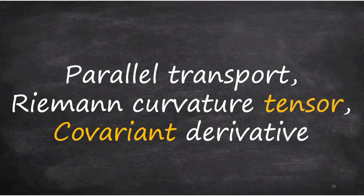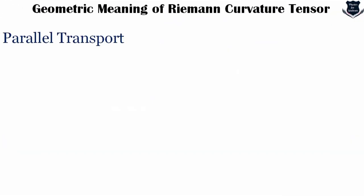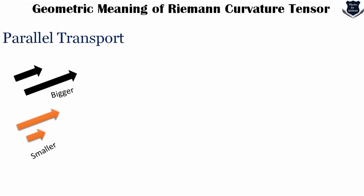We will quickly touch base on parallel transport, the Riemann curvature tensor, and the covariant derivative — each of which I have a separate detailed video for in my playlist. What do we mean by parallel transport? When comparing vectors, we can put one on the other and see if they match. In a simple case, comparing shows which is bigger or smaller. More precisely, parallel transport is a way of comparing vectors at different positions in a manifold — a way of transporting data along smooth surfaces.